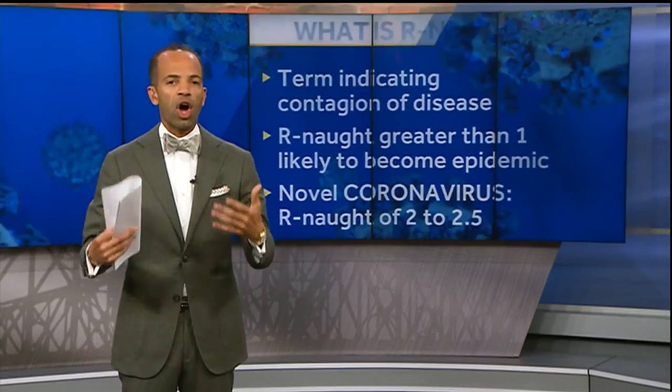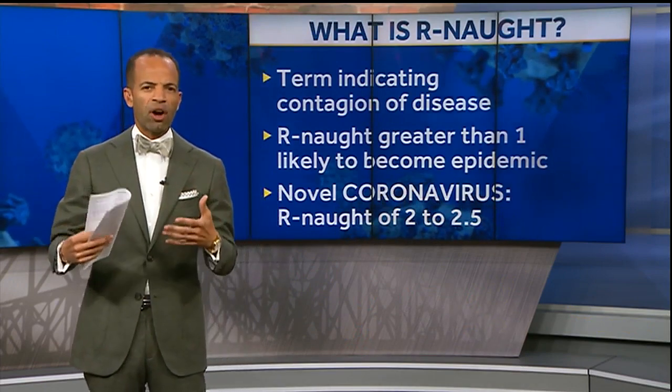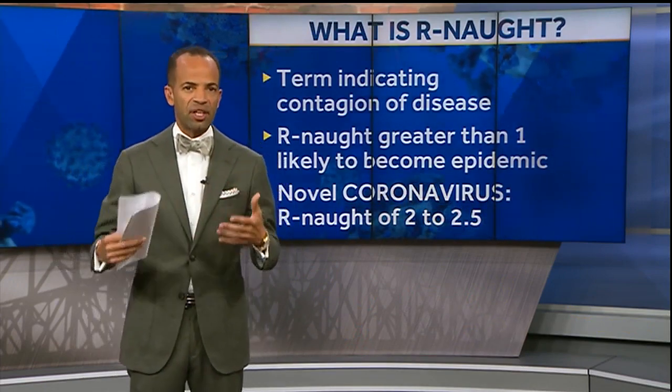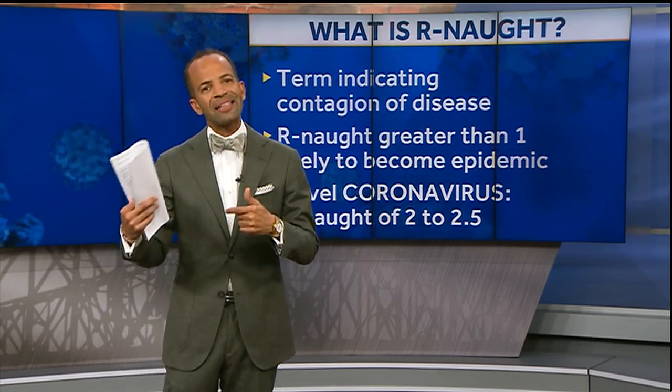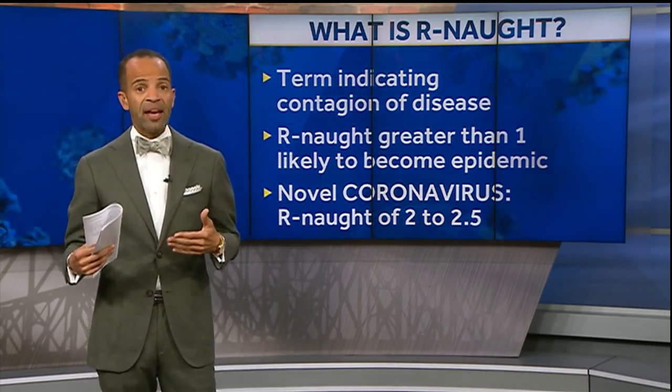Does the spread of coronavirus compare to the spread of other contagious diseases? This is something we actually think about called R-naught. I want people to really understand what R-naught is — it's an indication of the contagion of a disease. R-naught greater than one means that it's likely to become an epidemic.